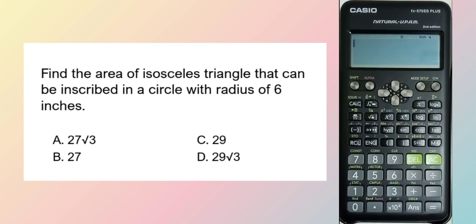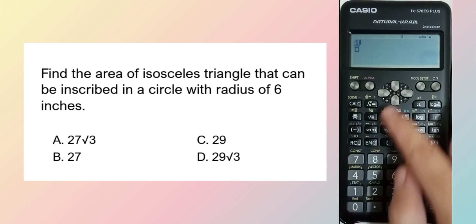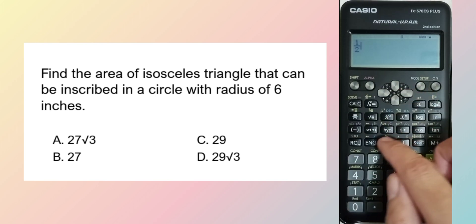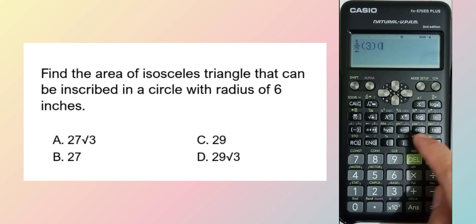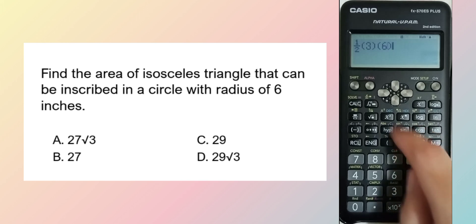Another method is by using the formula 1/2 times n (the number of sides, for this one since it is a triangle, 3) times r squared (the radius which is 6 squared).